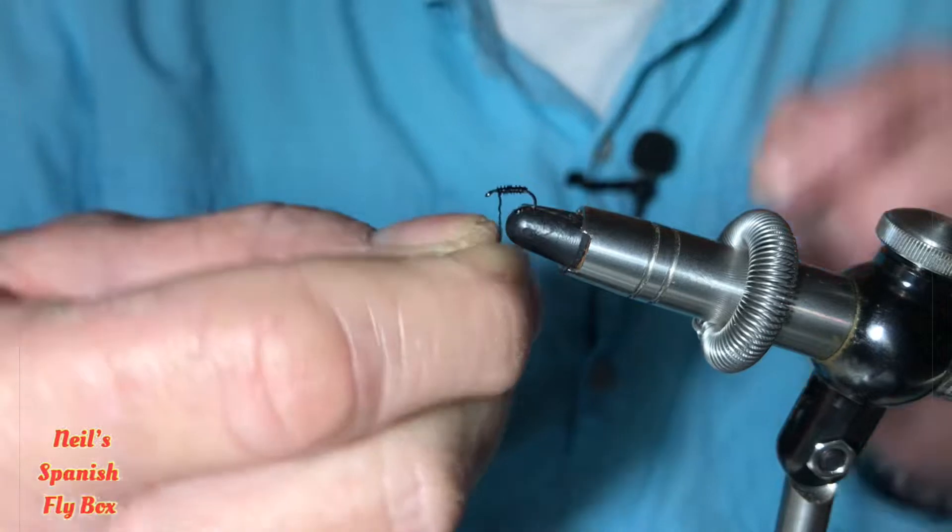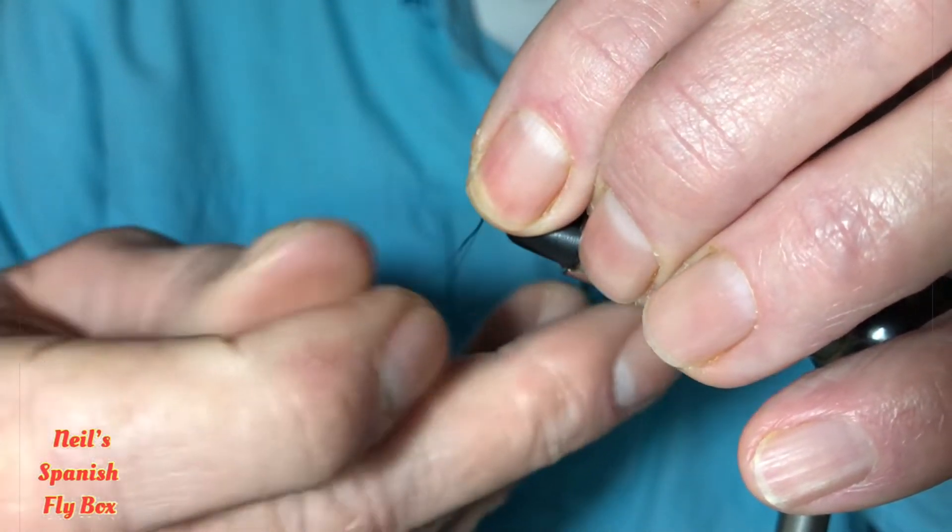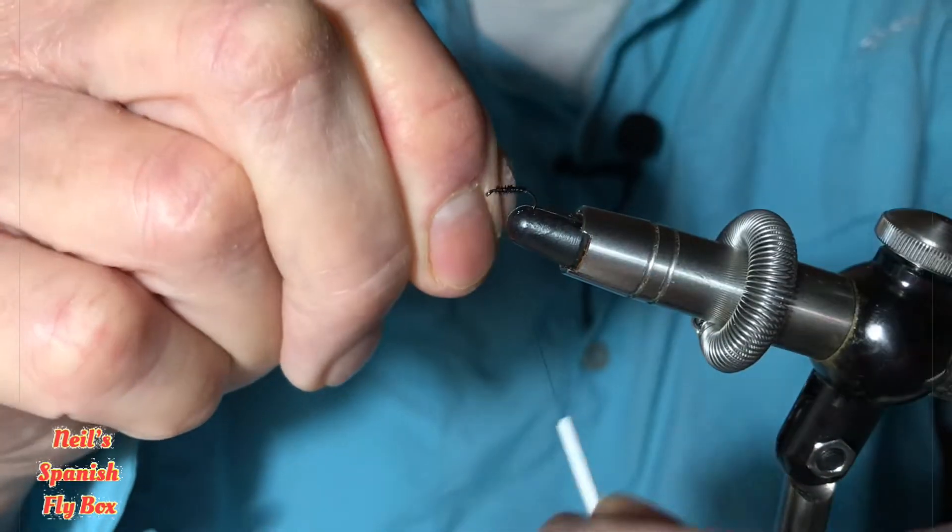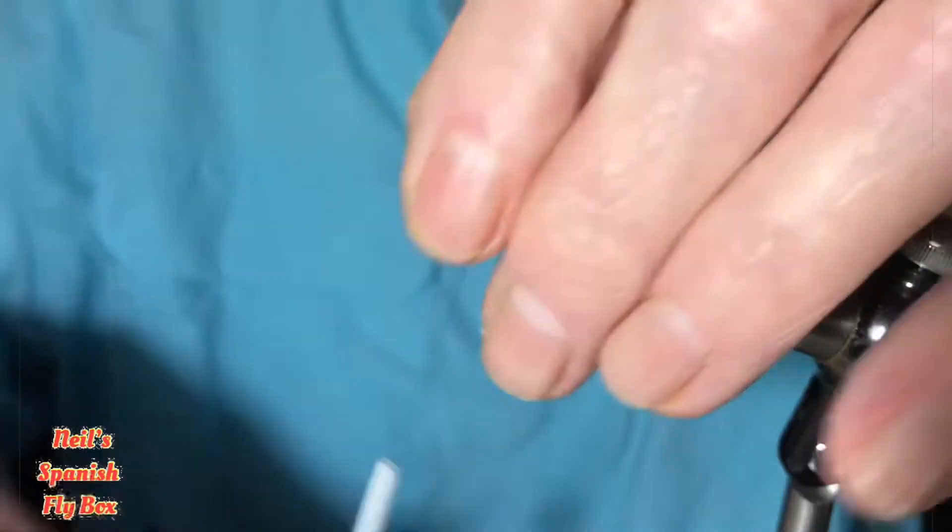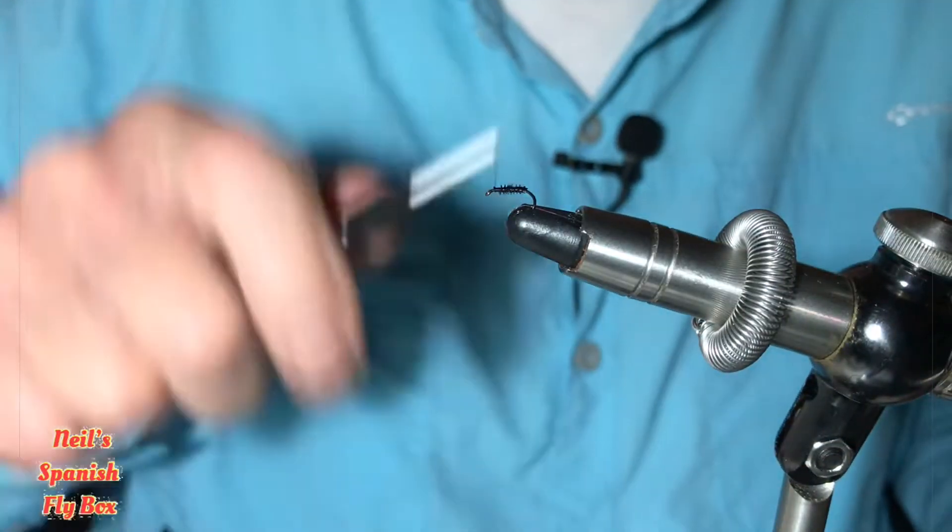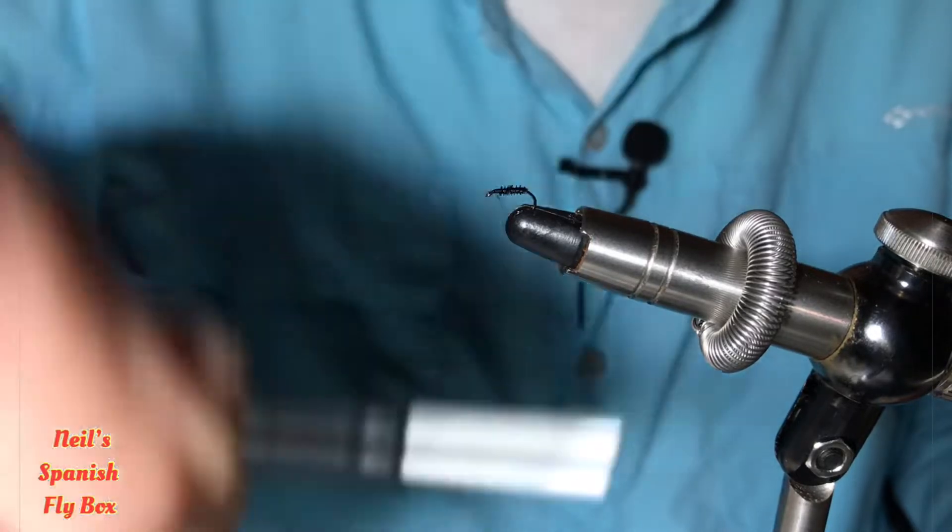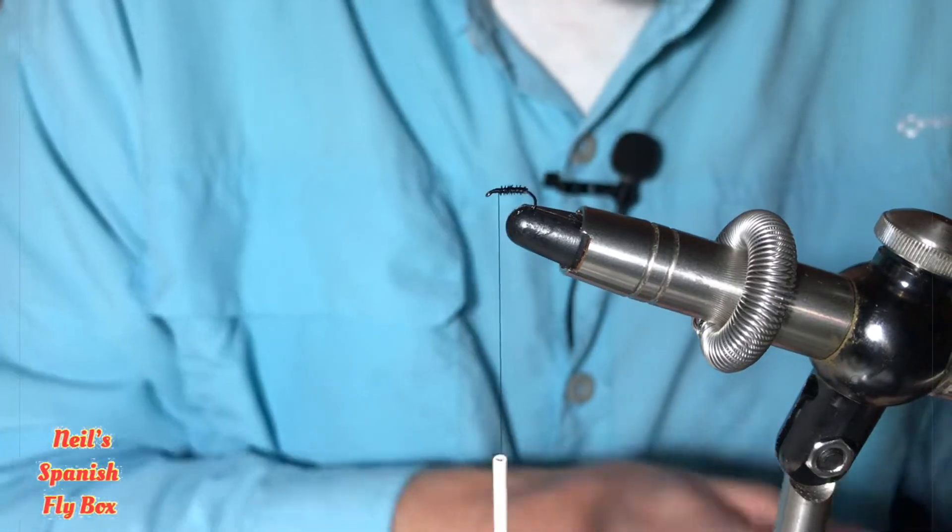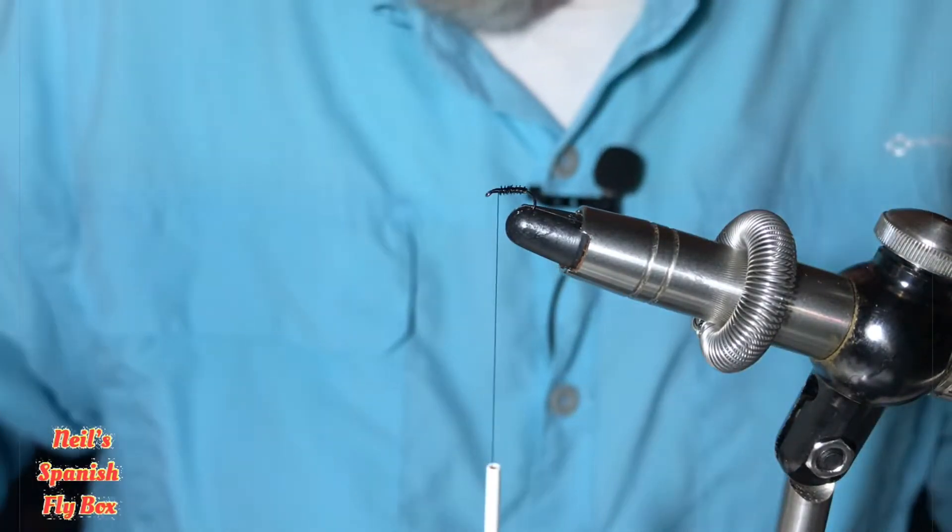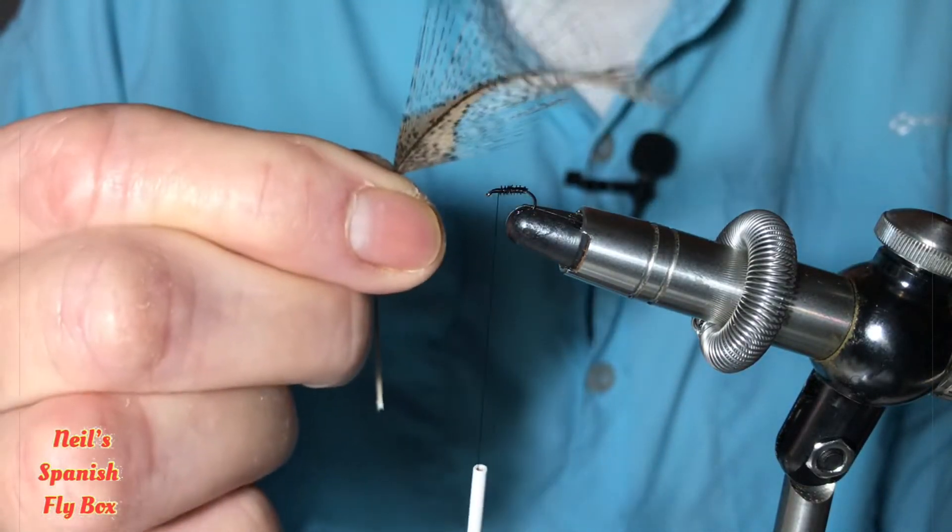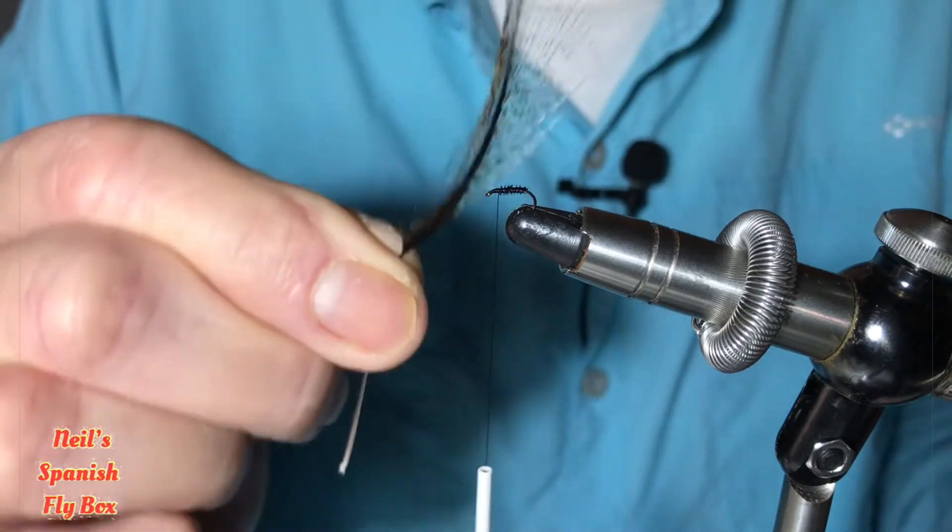It's a very small caddis. Tie that off and trim it up. And obviously you won't need too many fibers with it being such a small sedge or caddis.